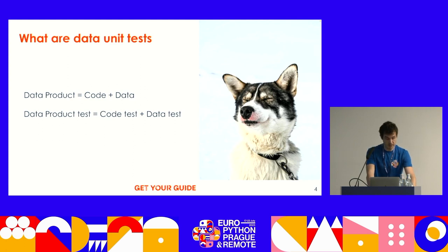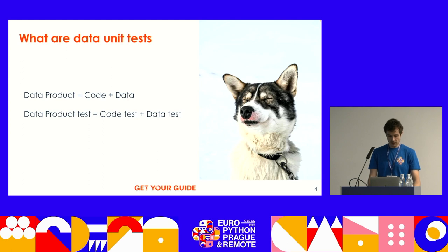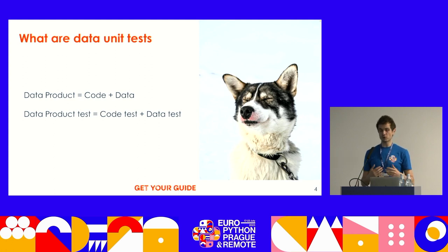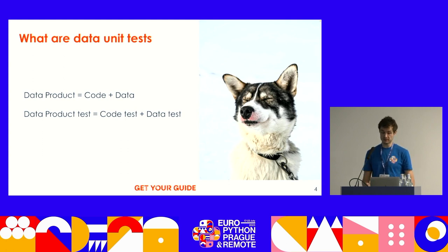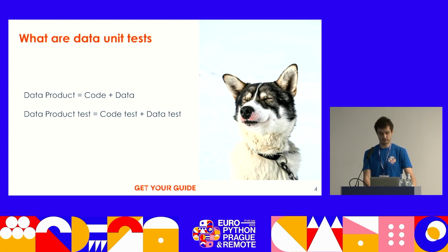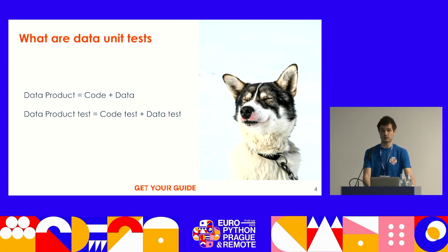If you work in an organization with multiple engineering teams, the code you own is usually owned by your team and they have full context when they change it. However, the data you are using is very likely not produced by your team — it's produced by some other teams, and maybe yet another team is transforming it before you use it. They very likely don't have the full context of how you're using the data. For us, we combine around 10 different data sources to rank all the activities.